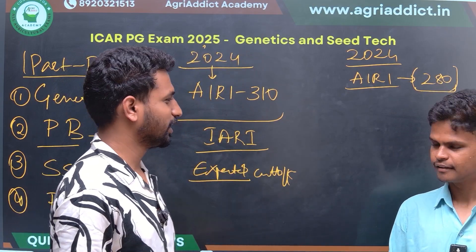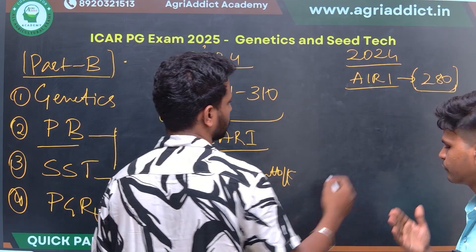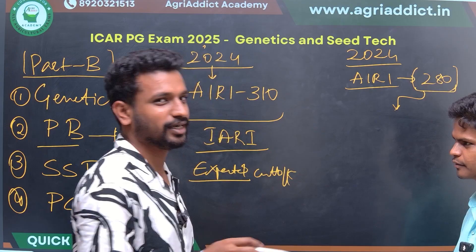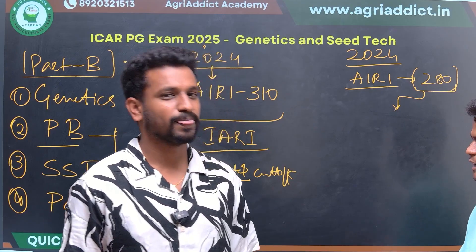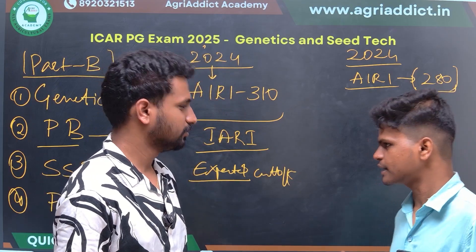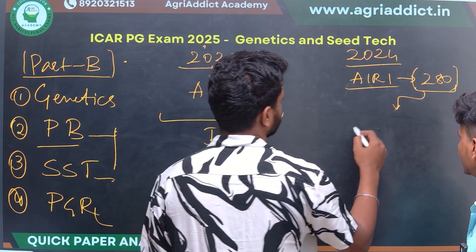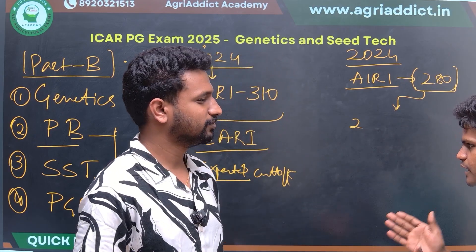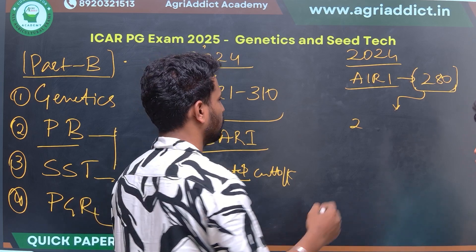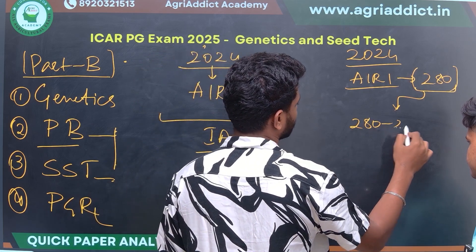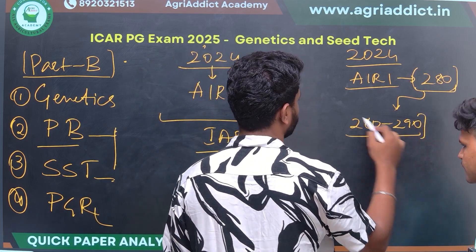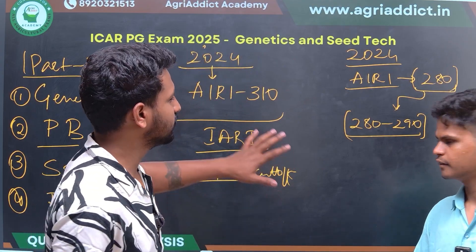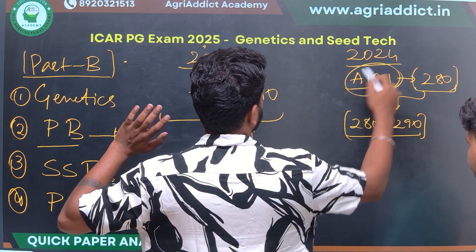Students from Genetics and Plant Breeding reported that Part B was easy to moderate, but Part C was difficult — they faced a lot of difficulty attempting those questions. Based on interactions with peers, the expected cutoff (first rank) for GPB this year will be similar to last year — around 280 to 290 — since Part C was also lengthy and difficult.